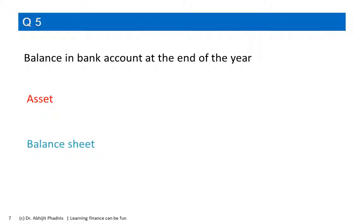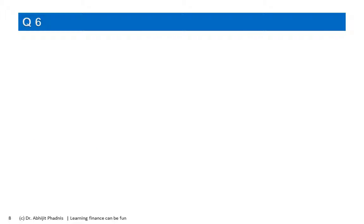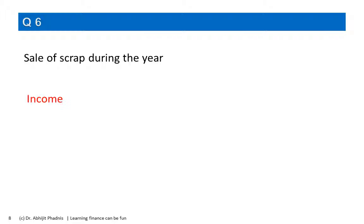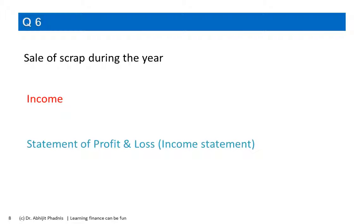Q6: sale of scrap during the year. This is not your main business, but in the production process certain scrap gets generated and you are selling it. That's your income, and because it's your income, it should be in the statement of profit and loss or in the income statement.